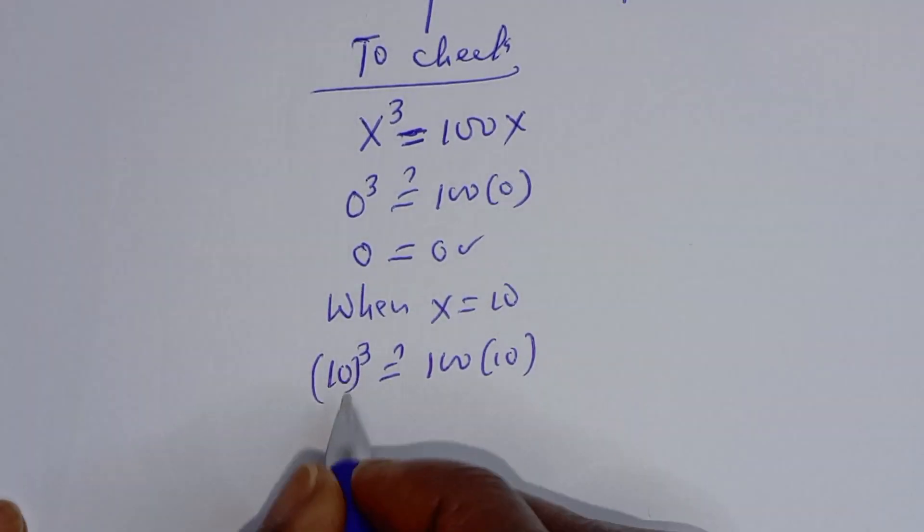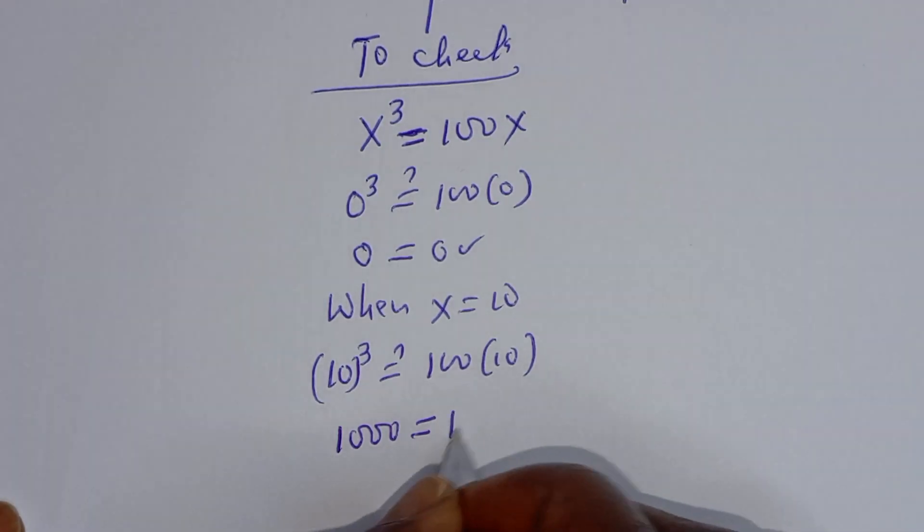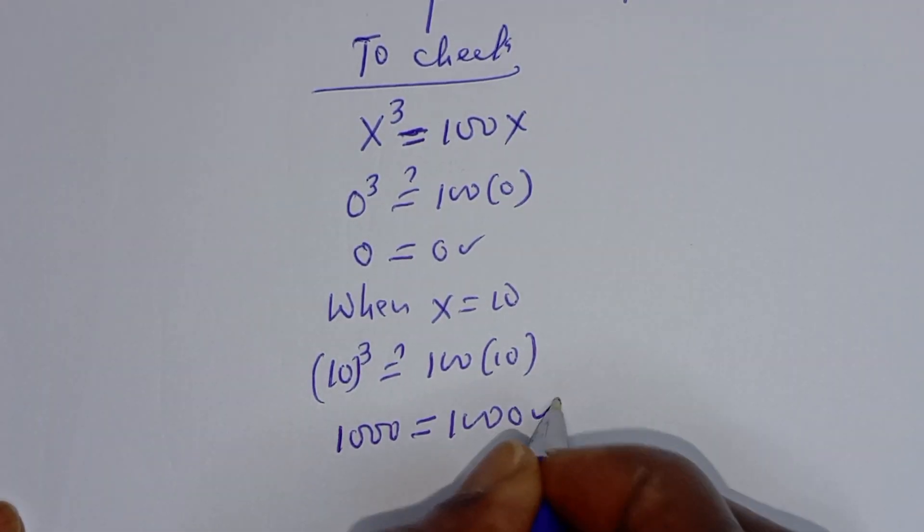Now 10 raised to power 3, this is 1000 is equal to 1000, which is true as well.